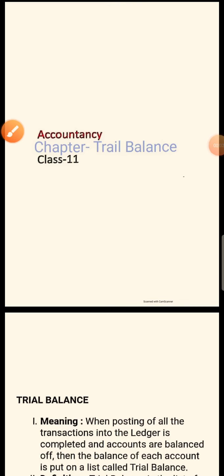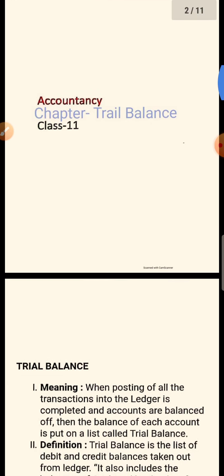Good morning dear students. Today we will start a new chapter — Trial Balance. First of all we made general entries, then ledgers, then trial balance. This is the sequence of accountancy. The sequence is: first you do the general entry, which means if any dealings have been done, then you record them in accounting form.